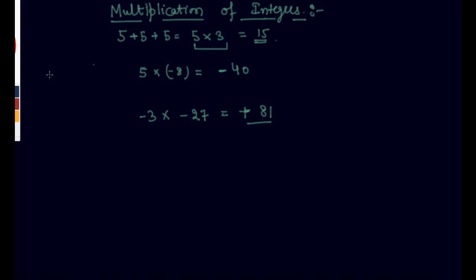This is a thumb rule: if there is only one negative sign in the multiplication, we will get a negative answer. And if there are 2 negative signs in the multiplication, the answer would be positive.